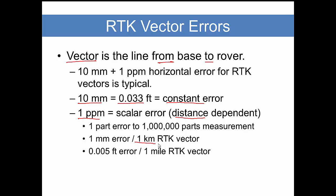The part one part per million is what we call the scalar error, and that is the distance dependent component. If you have an RTK vector that's one kilometer long, you can expect one millimeter. That is, there are one million millimeters in one kilometer. So one part per million is one millimeter per kilometer, or if you like to work in feet and miles, that's a half of a hundredth of a foot per mile.